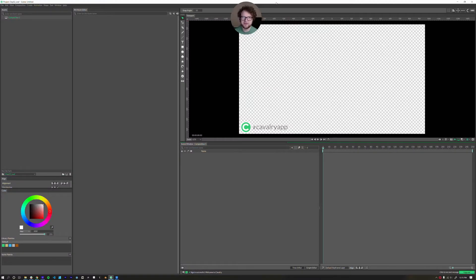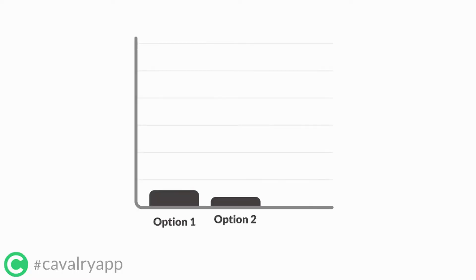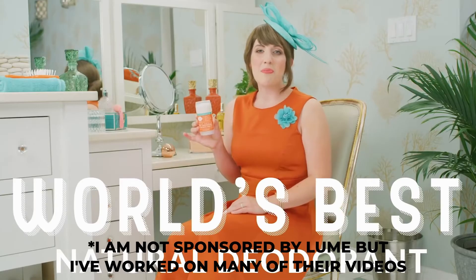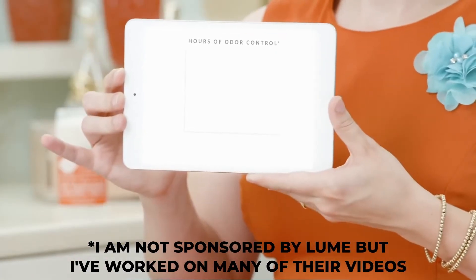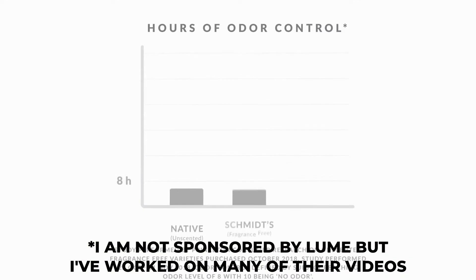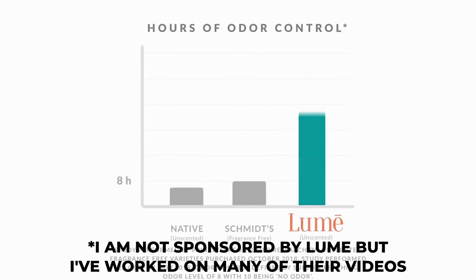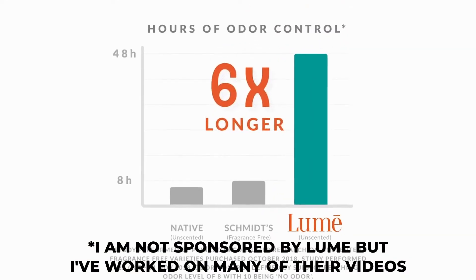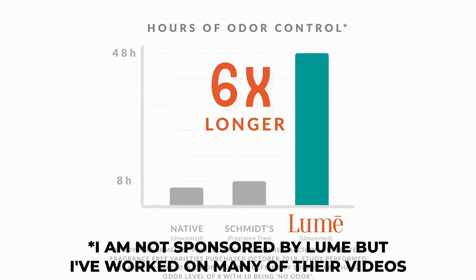Hello, this is Nick Ritter again. Welcome back to another Cavalry video. This is a tutorial about how to make a bar graph in Cavalry, and I'm going to be recreating a graphic that I animated a couple years ago for the original Lumi deodorant ad. It was a really fun project to work on. First up, let's make the bar graph itself.